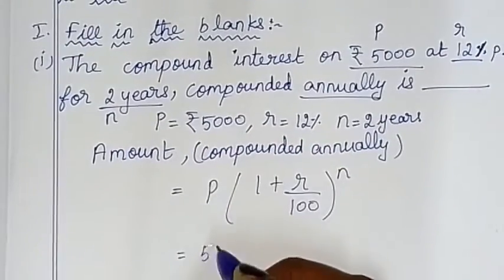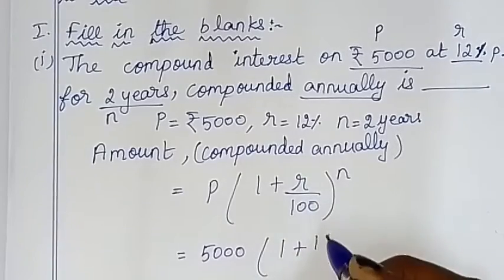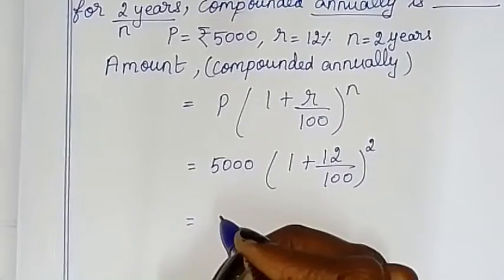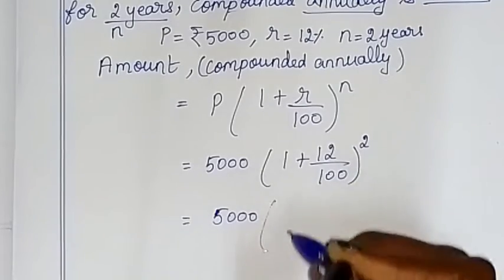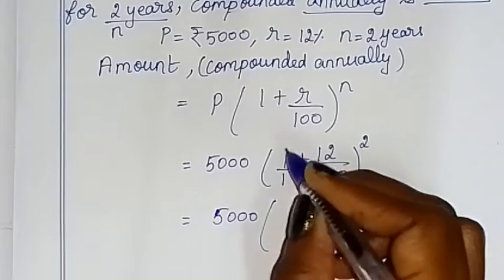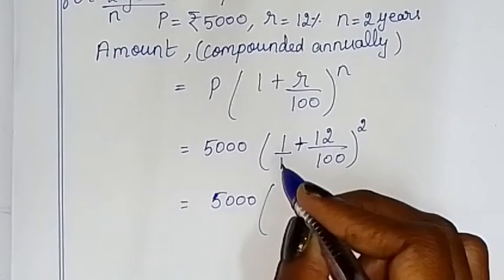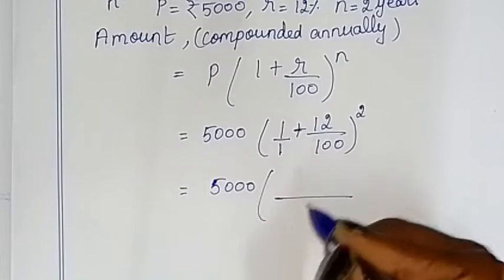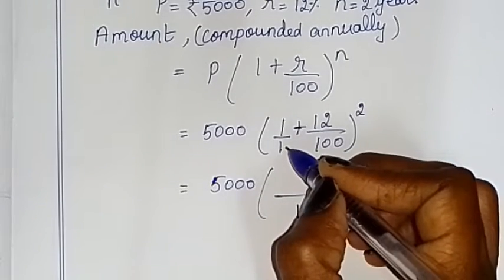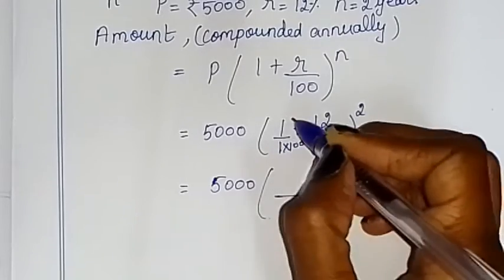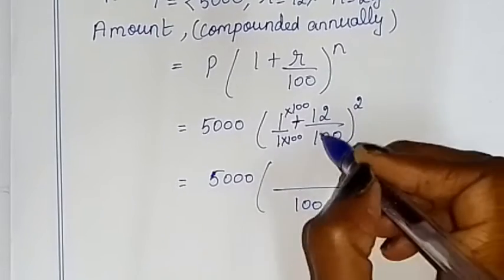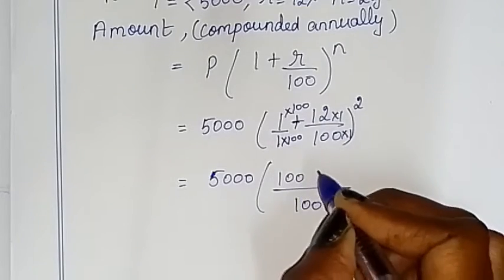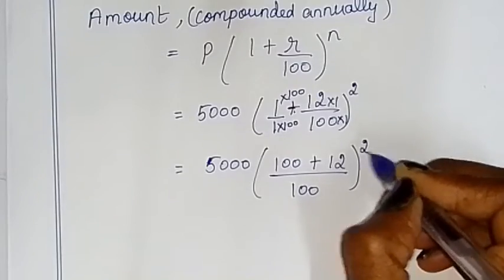So this is equal to principal value 5,000 into (1 + 12 by 100) whole power 2. Solving the bracket: the denominator is the same, so we convert — the LCM is 100, making the numerator 100 + 12, which gives us 112 by 100.